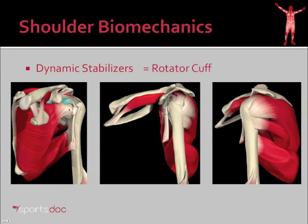There are four rotator cuff muscles surrounding the shoulder: the subscapularis, supraspinatus, the infraspinatus, and the teres minor.